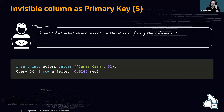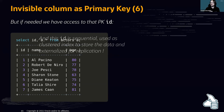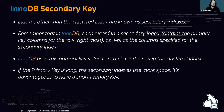Compared to InnoDB's auto-generated hidden primary key — which is 6 bytes, shared between all tables without a primary key, and invisible to you — with this approach you have full control. You can inspect it, and replication uses this primary key as well. So it is sequential, used as the clustered index, and visible to replication. If you don't have a primary key, you can create one as an invisible column in MySQL 8.